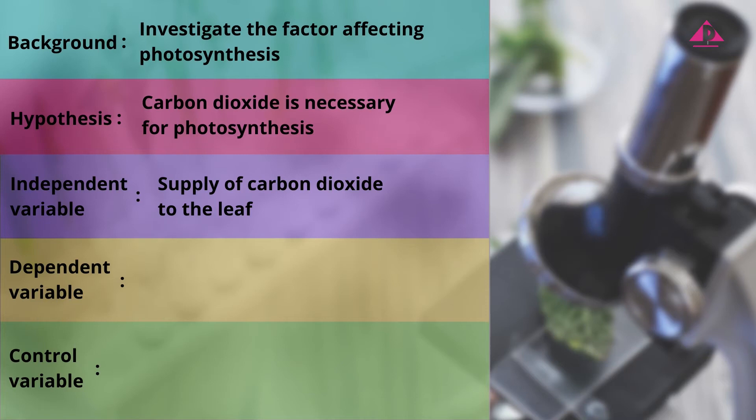For the dependent variable, it depends on the change in the independent variable. If there is carbon dioxide supply, photosynthesis occurs, and vice versa. If photosynthesis occurs, glucose is produced and converted to starch for storage.